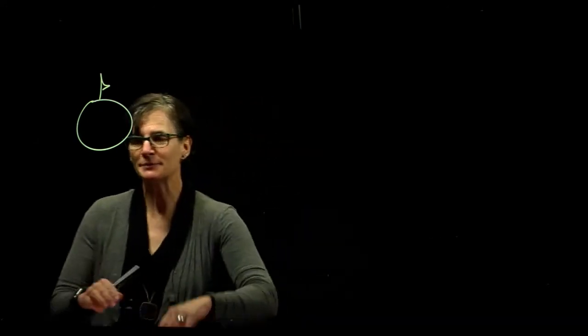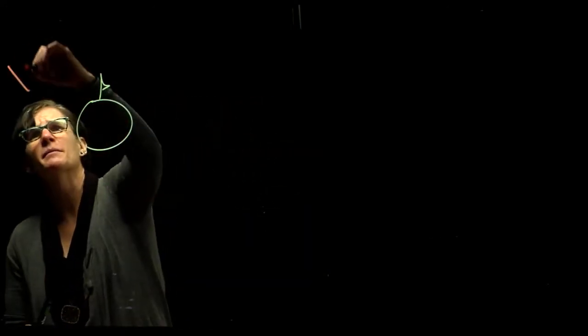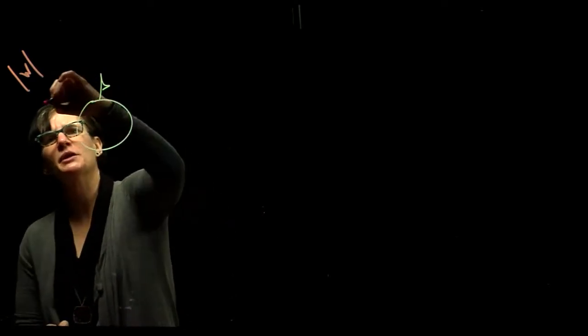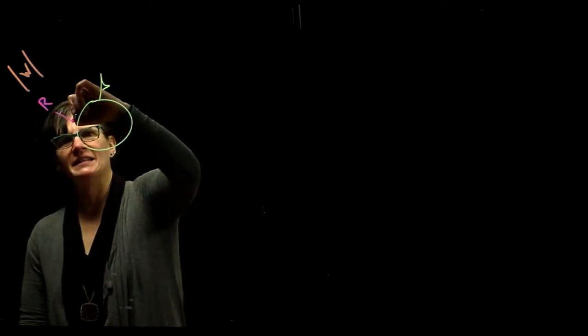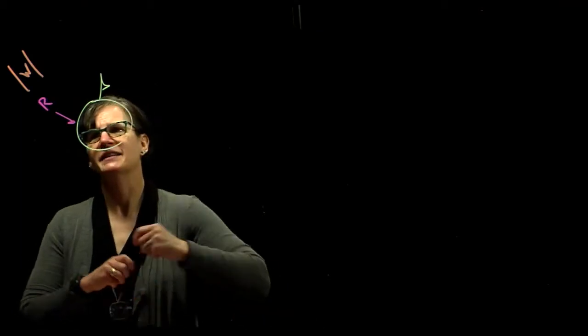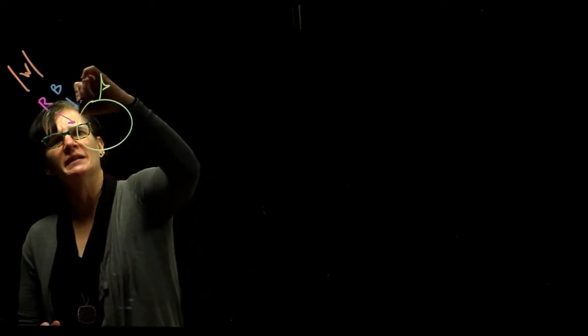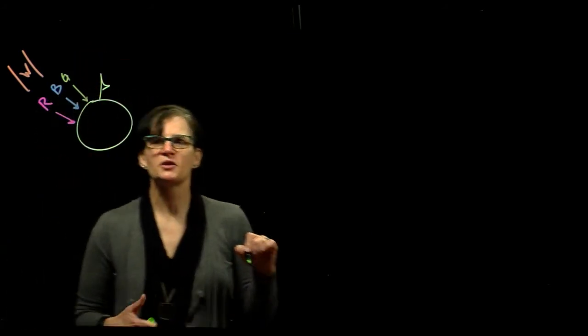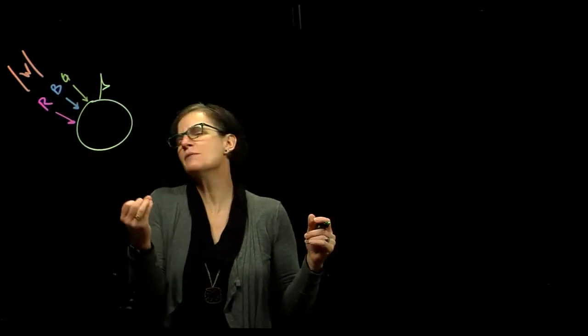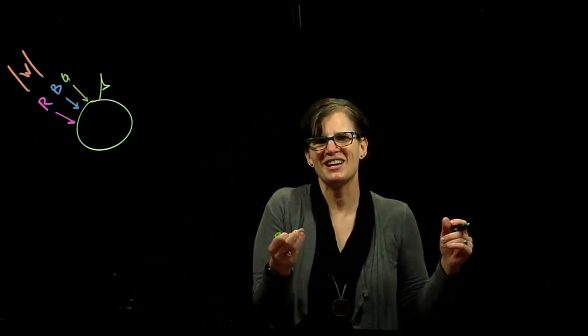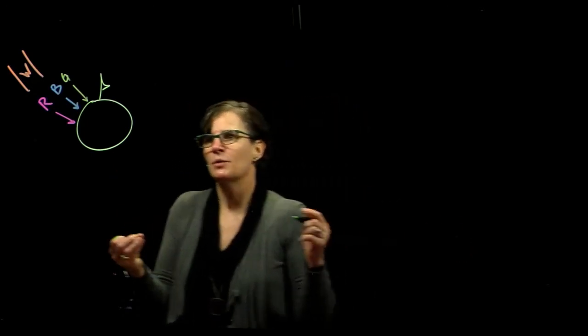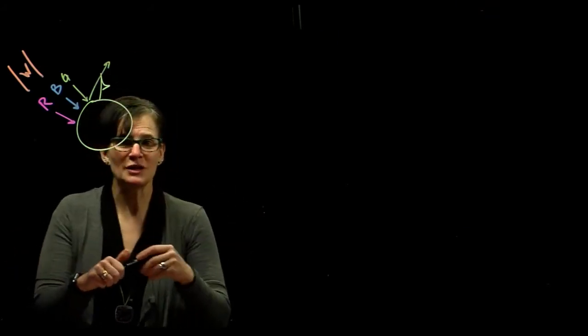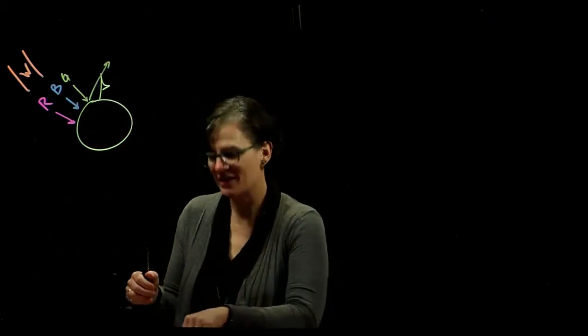So imagine we have this green apple, and we have a beam of white light coming down upon that green apple, and we know that white light is made up of red, blue, and green in our model. So what happens when those three wavelengths of light, those three light colors, hit this green apple? Well, the green light bounces off due to the makeup of that apple, fundamental with that apple.